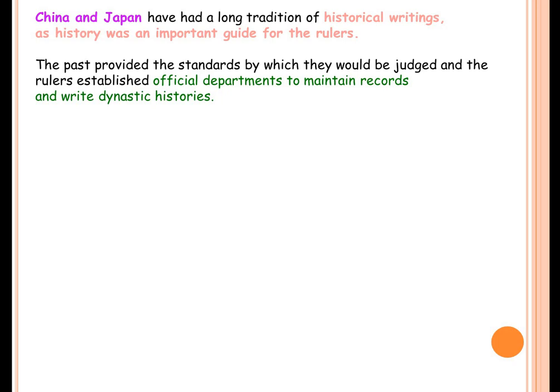China and Japan had a great long tradition of historical writings, and history was an important guide for the rulers. They wrote a lot of historical writings which paved as a guide for rulers. The past provided the standards and the strength by which they could be judged. The rulers started establishing official departments which maintained records and wrote dynastic histories, helping official people to keep records — something distinct from the other parts of the world.